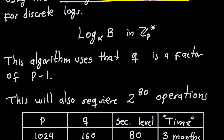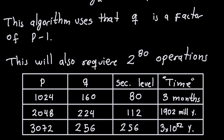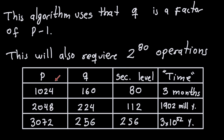Let me explain the security levels for different parameter choices. We don't always have to use 1024 bits for P and 160 bits for Q. According to the standard, you can also use P of 2048-bit length with Q of 224-bit length, or P of 3072-bit length with Q of 256-bit length. The prime generation is similar in these cases.